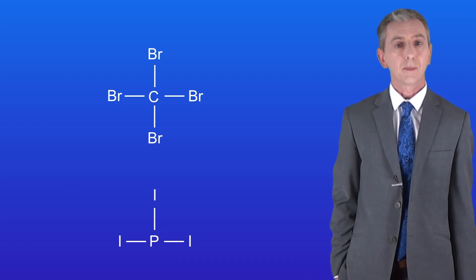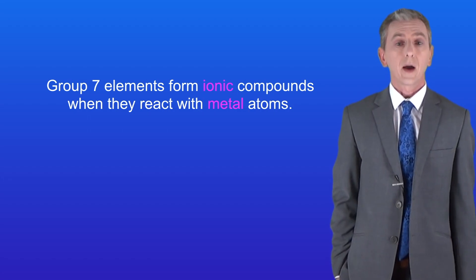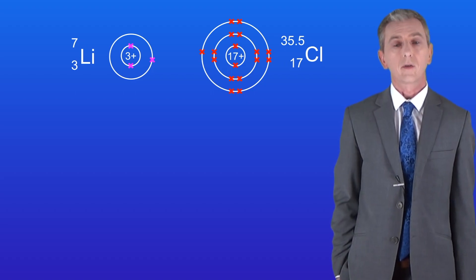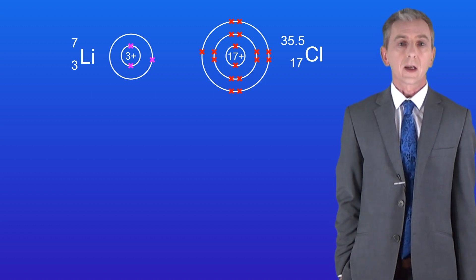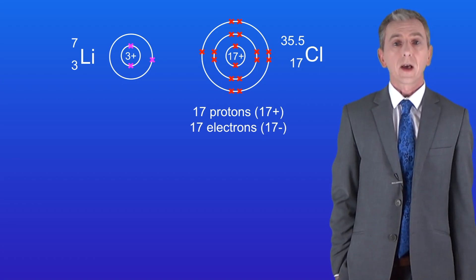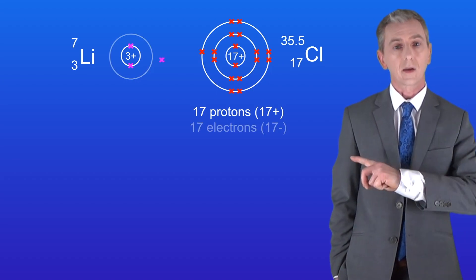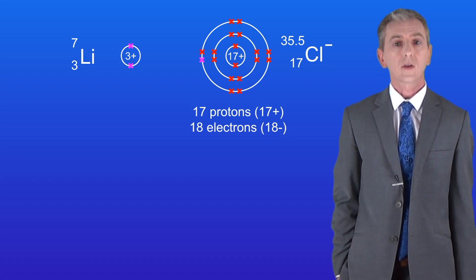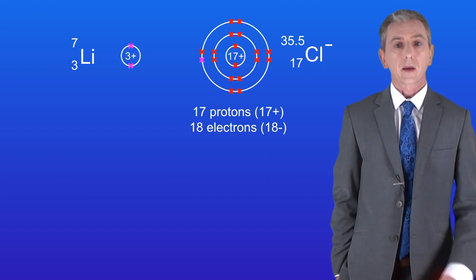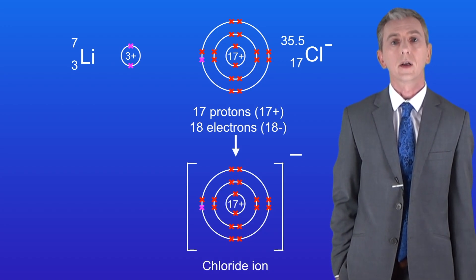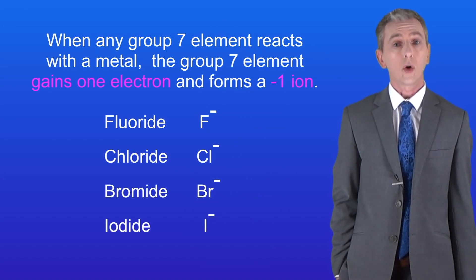But what happens when Group 7 elements react with metals? In this case they form ionic compounds. Here I'm showing you chlorine reacting with the metal lithium. Lithium has one electron in its outer energy level and chlorine has seven. The chlorine atom has 17 positive protons and 17 negative electrons, giving it no overall charge. When Group 7 elements react with metals, they gain an electron from the metal atom. This chlorine now has 17 protons but 18 electrons, giving it an overall minus one charge — we call this a chloride ion. All Group 7 elements gain one electron and form a one-minus ion when reacting with metals.